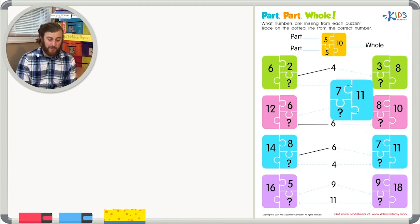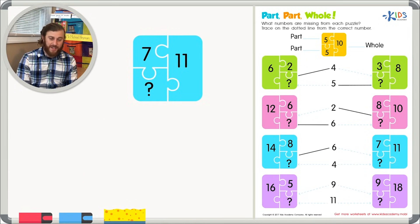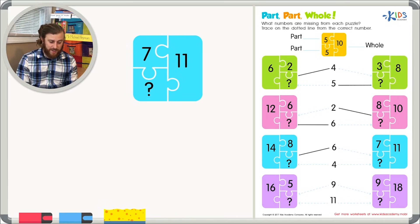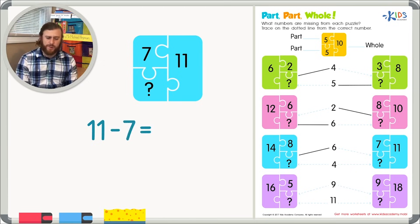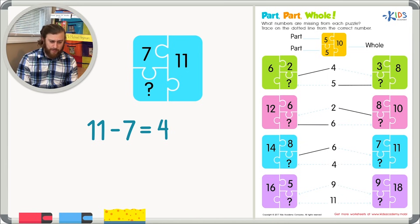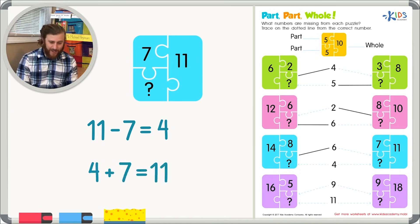Our other example has 11 as the whole number and seven as the first part. So let's subtract seven from 11: 11 minus seven equals four. We'll check our work with addition — the missing part of four plus seven does equal 11. Let's trace on the dotted line to four because that is our missing part.